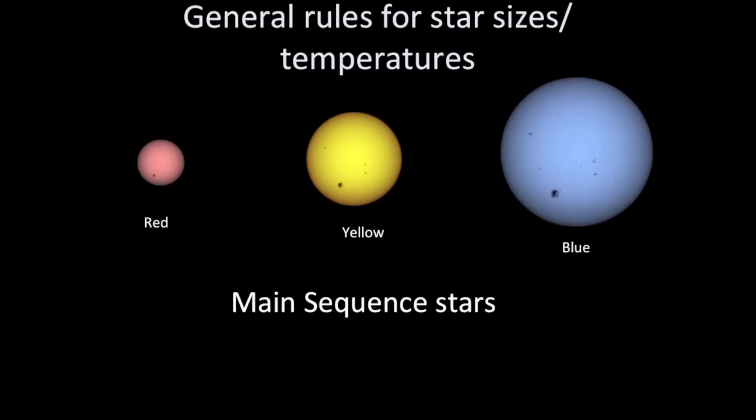So just to summarize, a red main sequence star will be smaller, less massive, and lower in temperature than a yellow main sequence star or a blue main sequence star. A blue main sequence star will be larger than all the rest and will be higher in surface temperature.